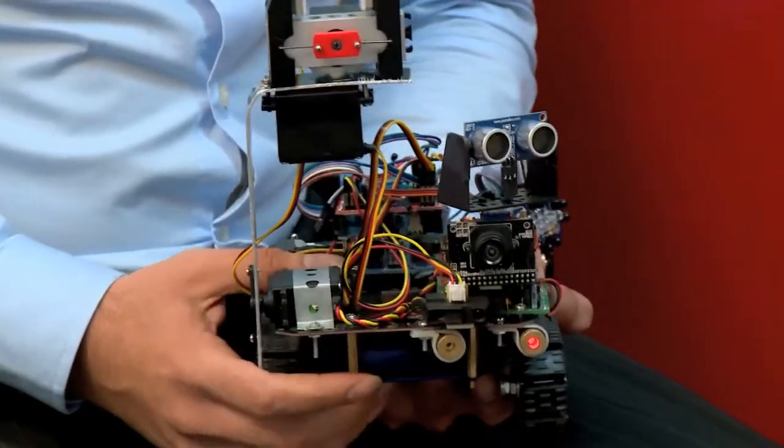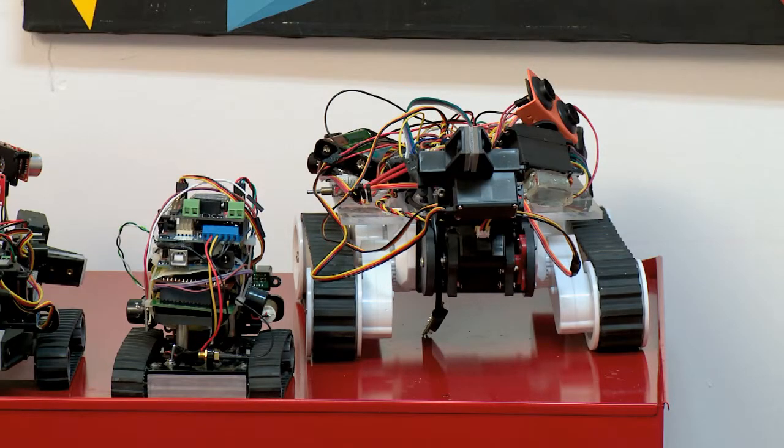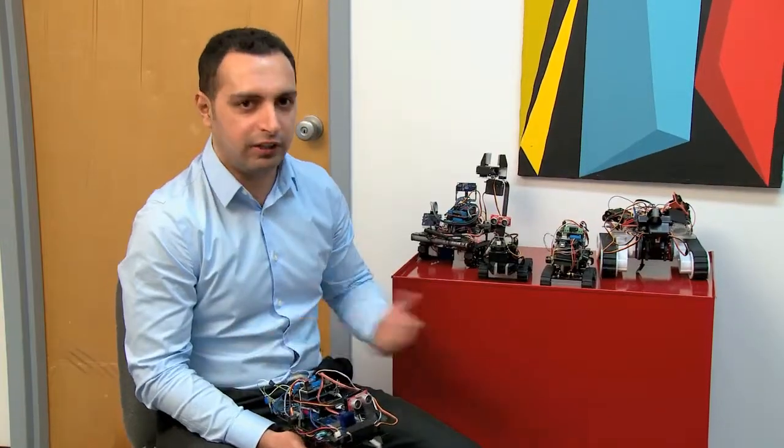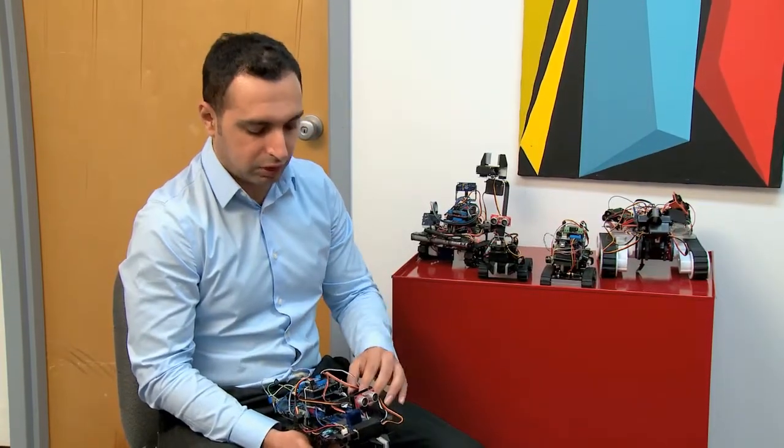The UbiSwarm is made up of five different robots. As you can see, they are different in not only their features, but also their size. All of them we have made right from the ground up through off-the-shelf components.